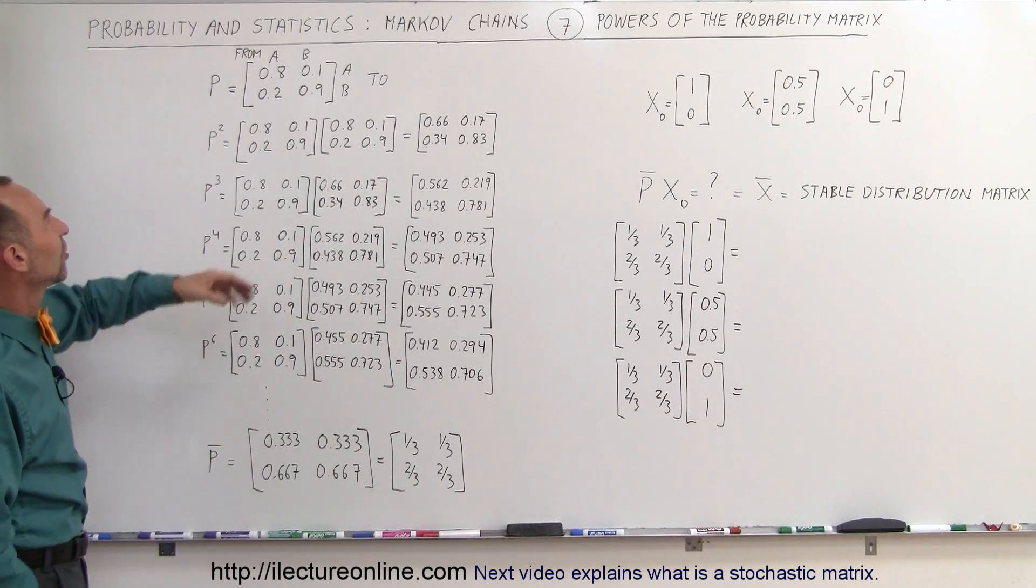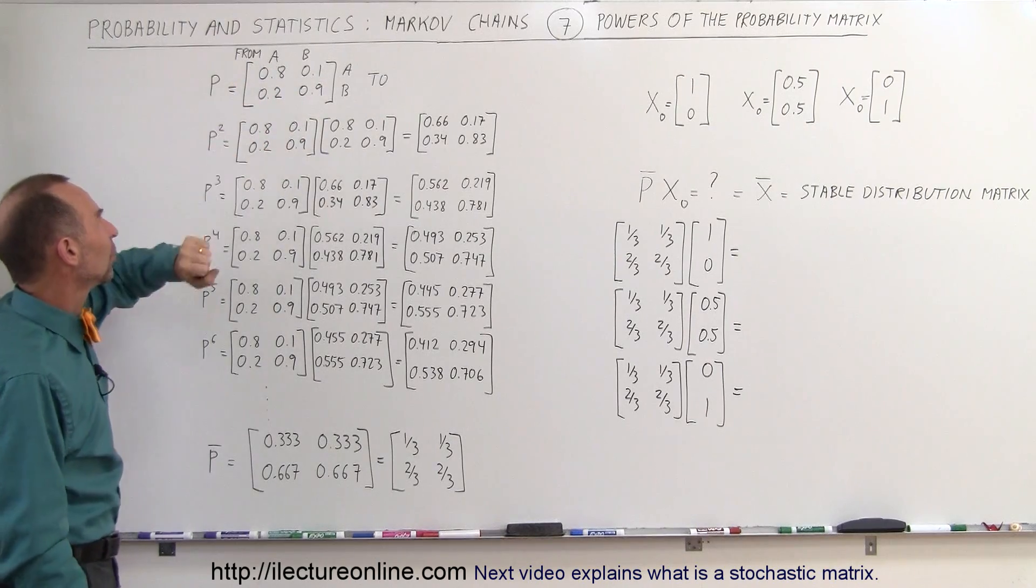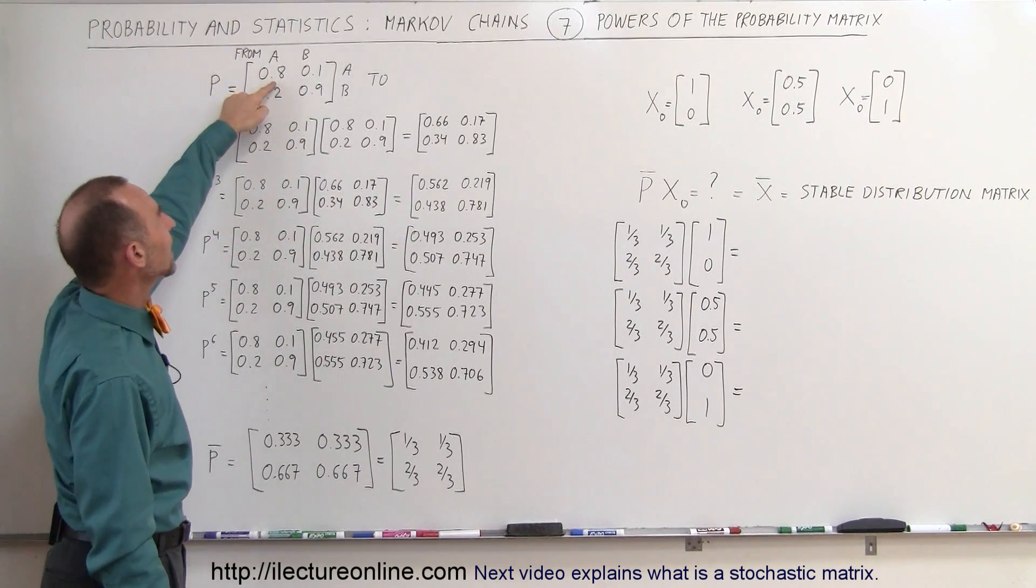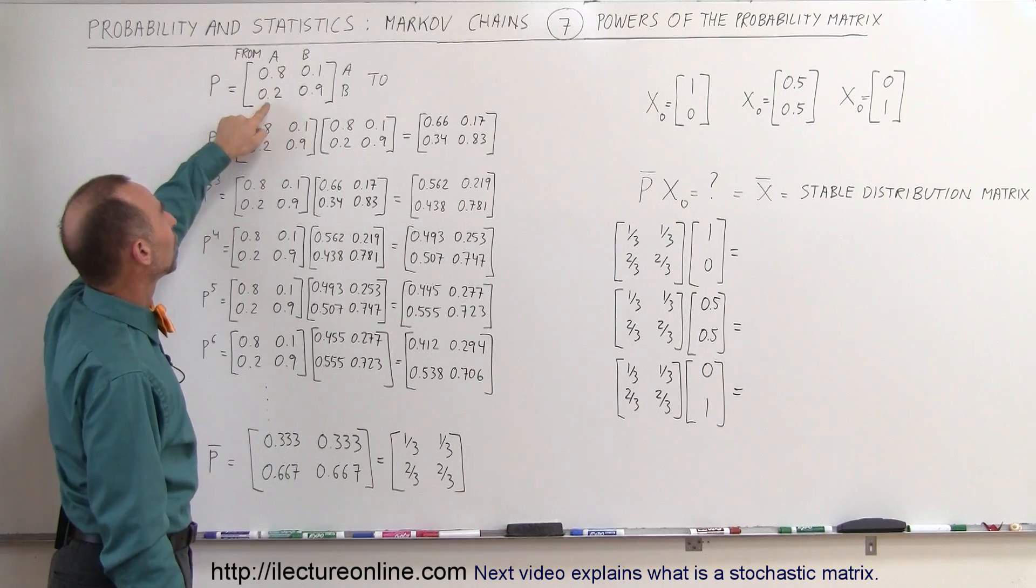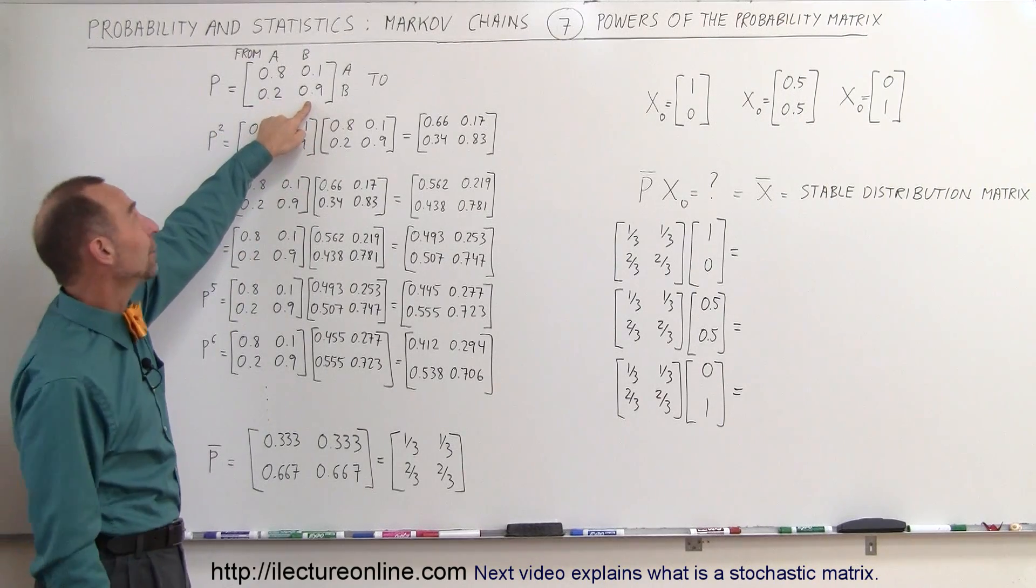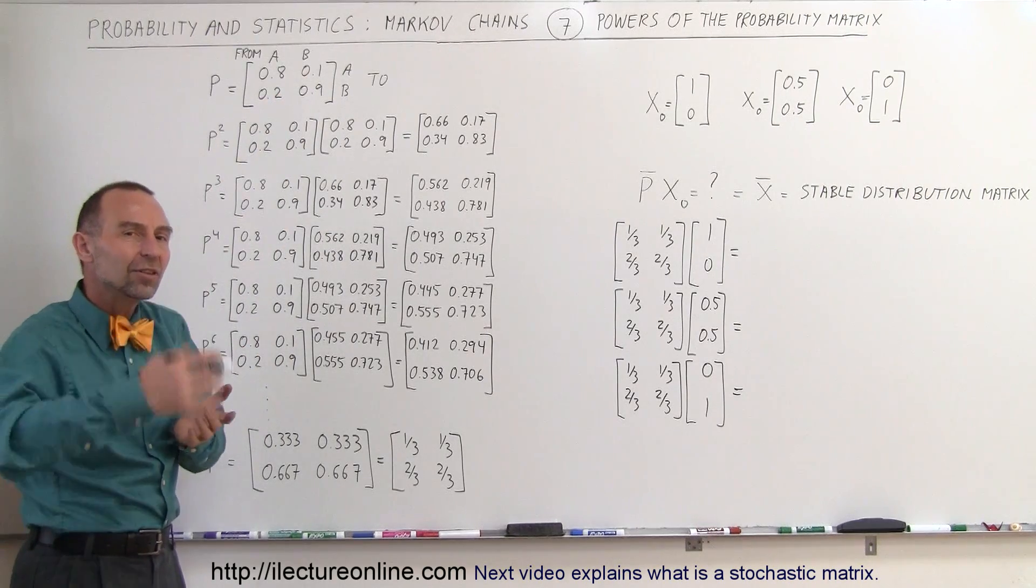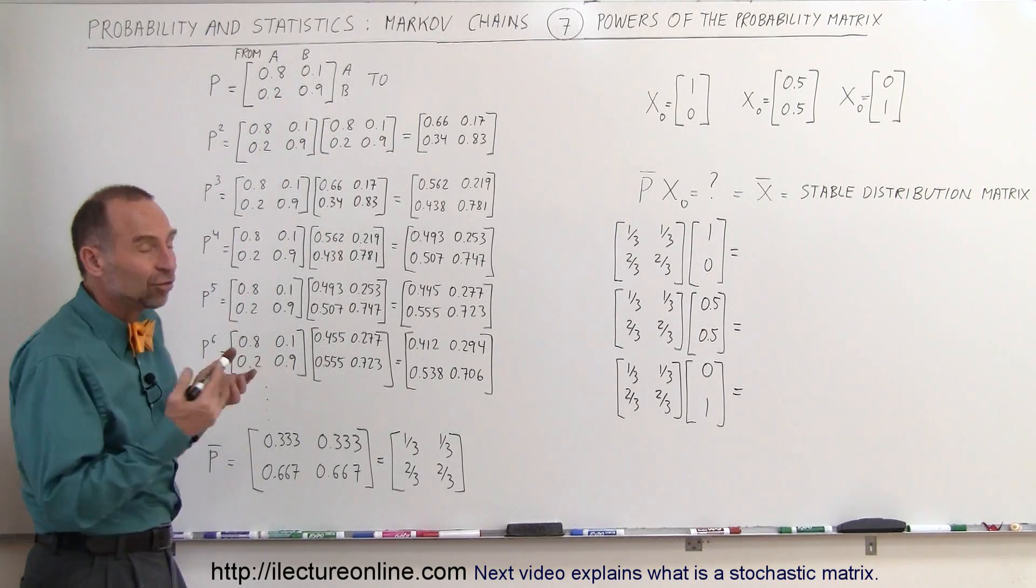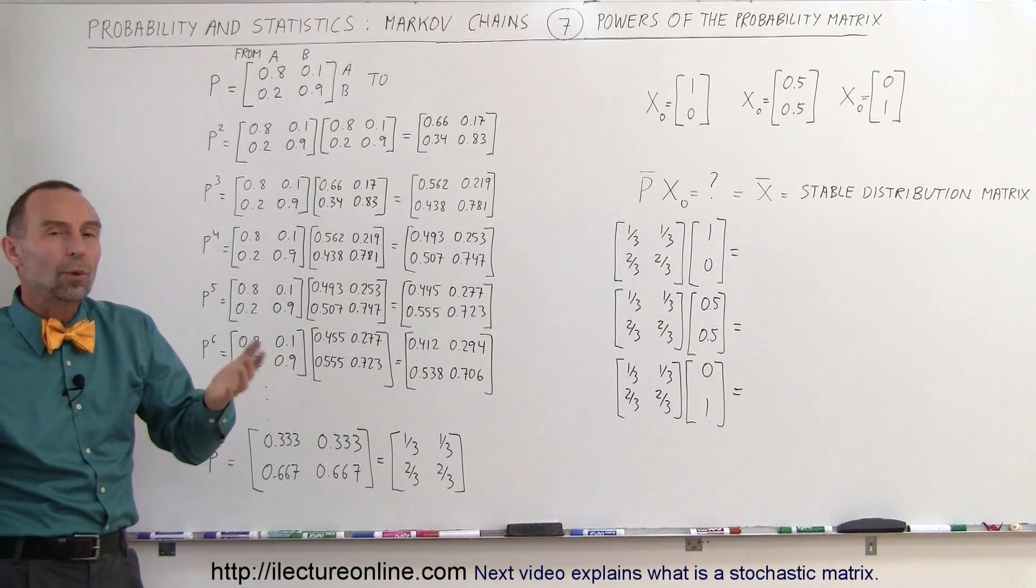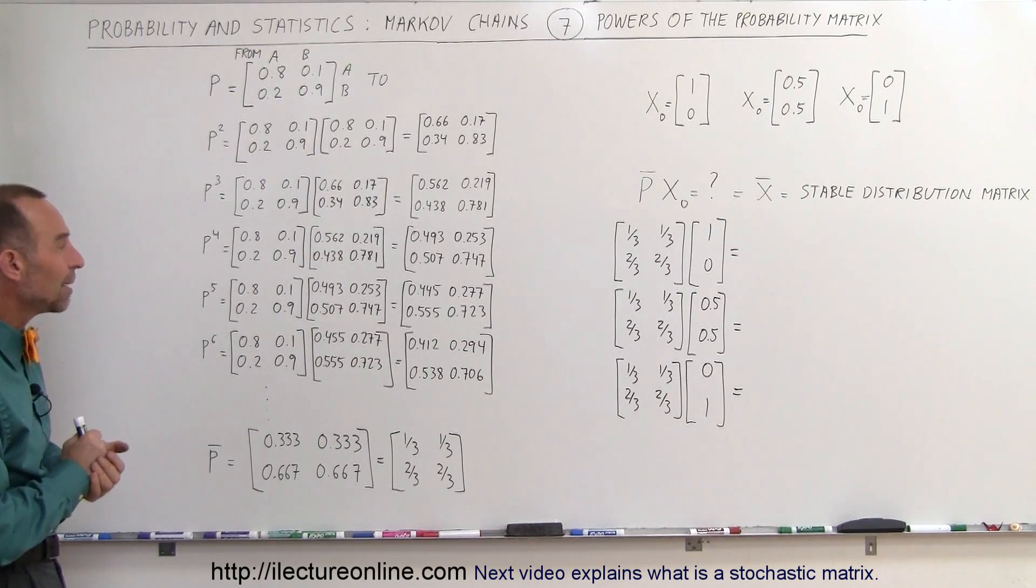So let's say that we have a two-state system, we have A and B, and we have a probability matrix that looks like this, which means if we're A, we remain A 80% of the time, and we go to B 20% of the time. If we're B, we remain B 90% of the time, and go back to A 10% of the time. If this continues on, and let's say we have some sort of initial matrix, what will the end state be in that case? What will the stable distribution matrix be?